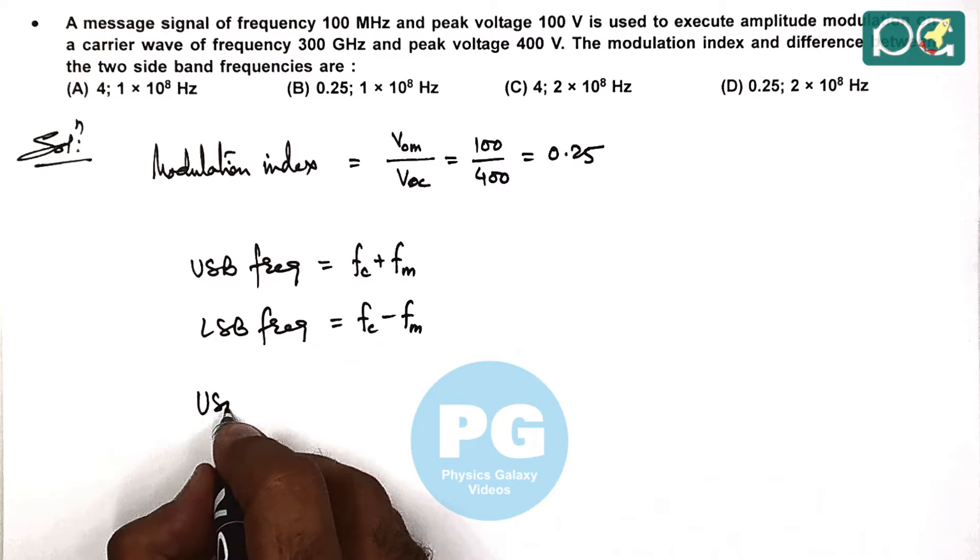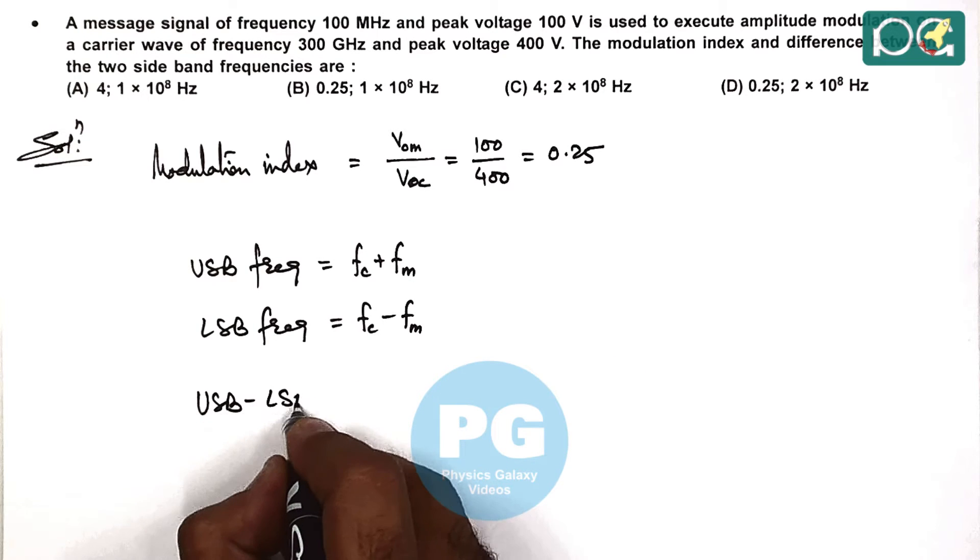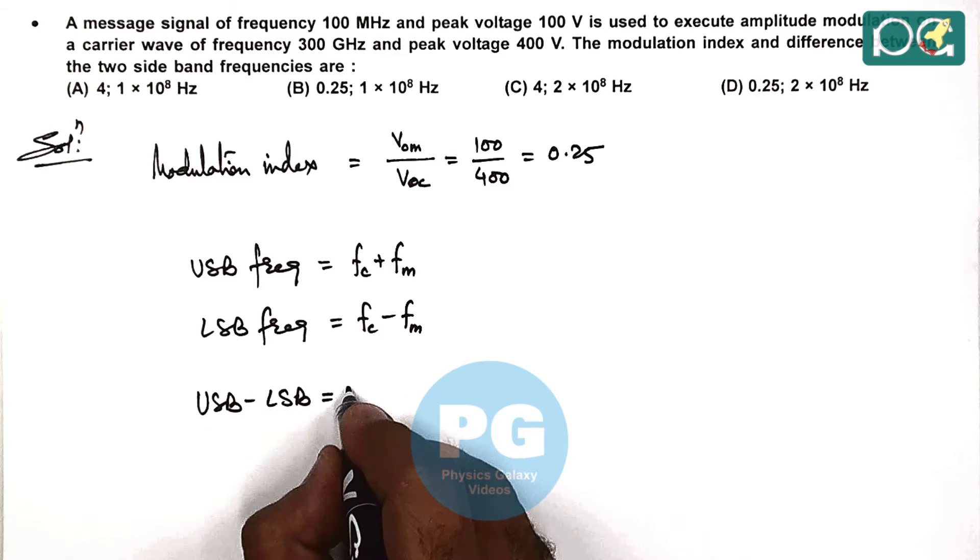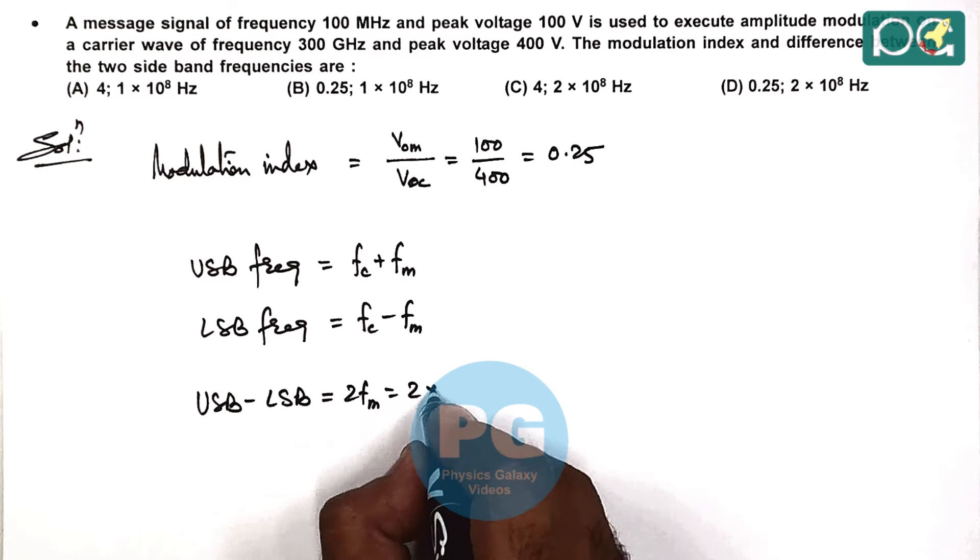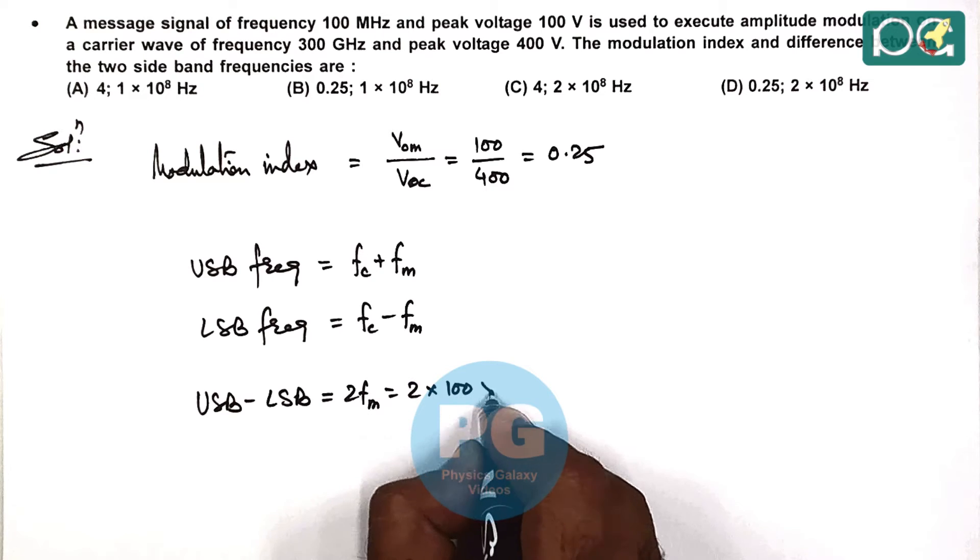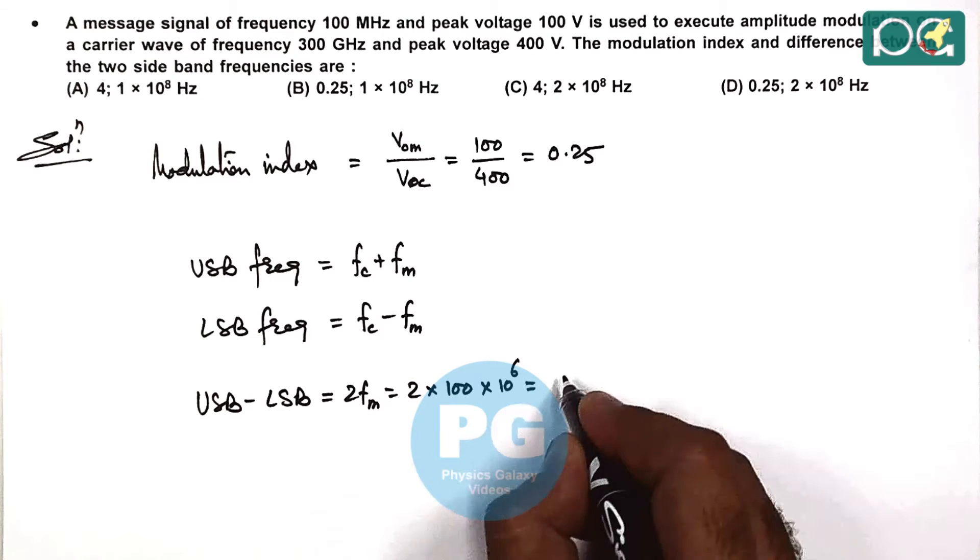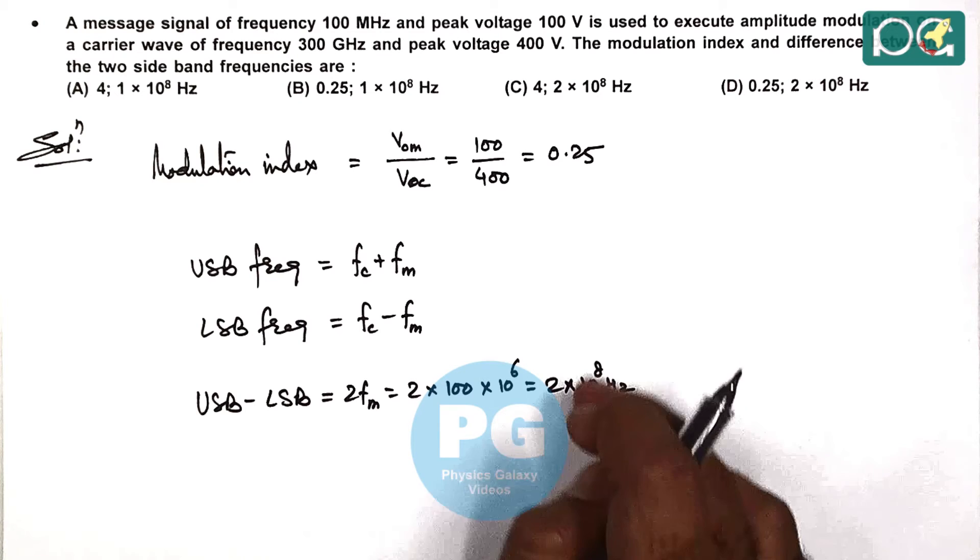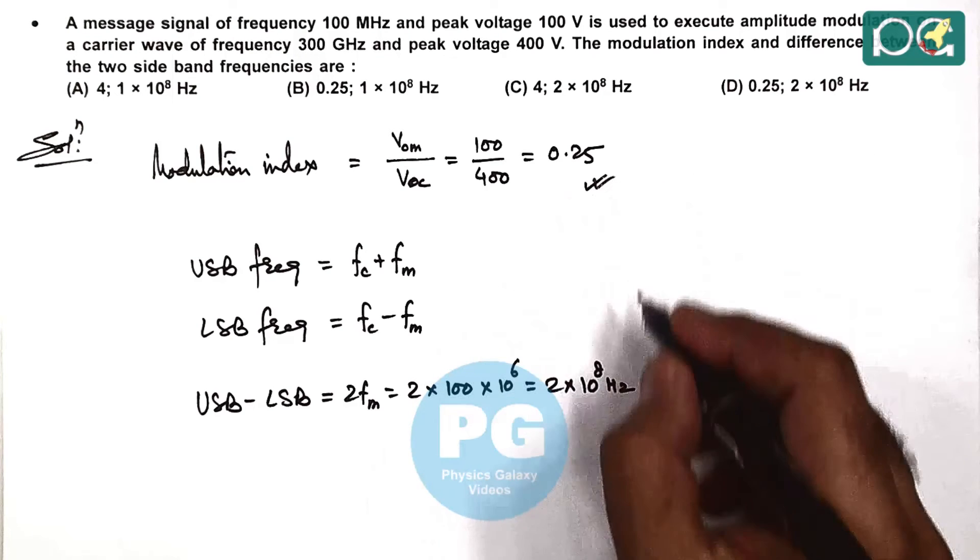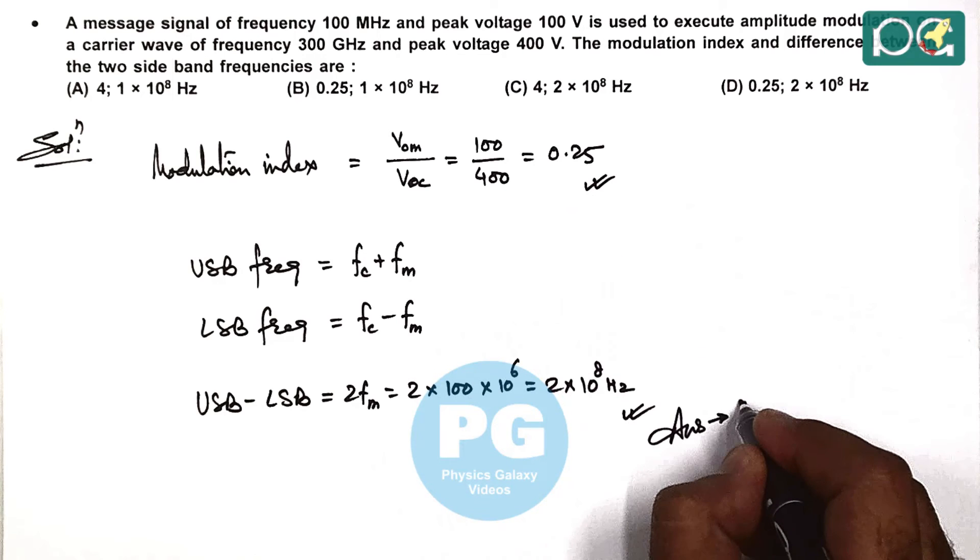And if we calculate USB minus LSB, which is the bandwidth, this is twice the modulating frequency, which is 2 × 100 × 10^6, which equals 2 × 10^8 Hz. So your answer option from these two values will be option D.